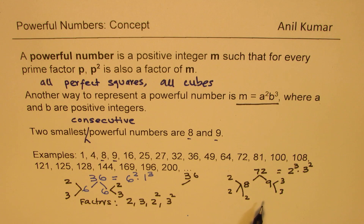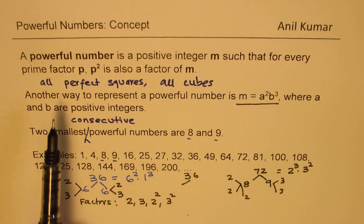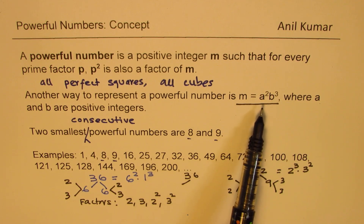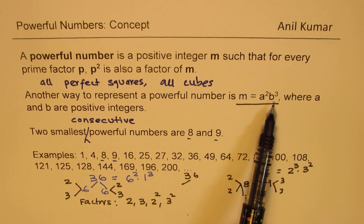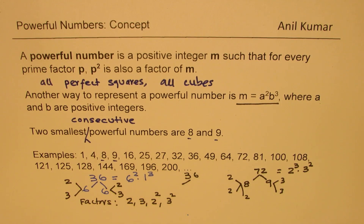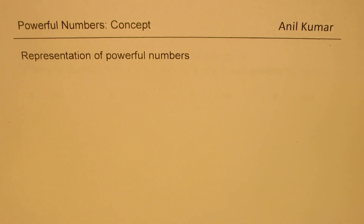So that is important to understand about powerful numbers. I hope you get an idea about powerful numbers. This is the list of all powerful numbers, which includes all the perfect squares, all the cubes, and also numbers of the form a squared times b cubed. Those products are also in the list of powerful numbers, and we also understand that 8 and 9 are the smallest consecutive powerful numbers. Note that 2 is not a powerful number. Now let us see the geometrical representation of these powerful numbers — that is also very interesting.